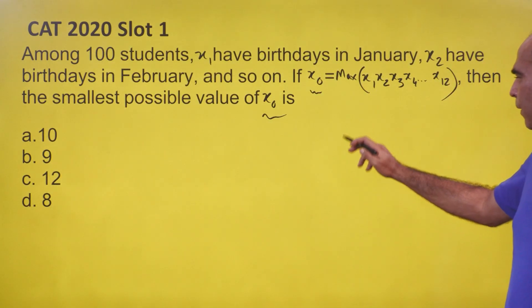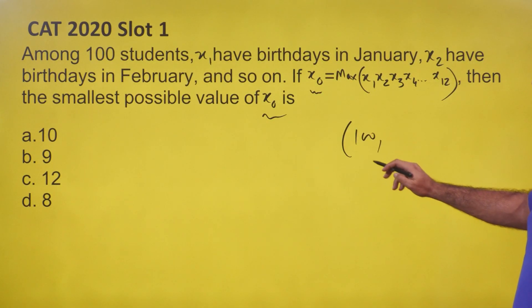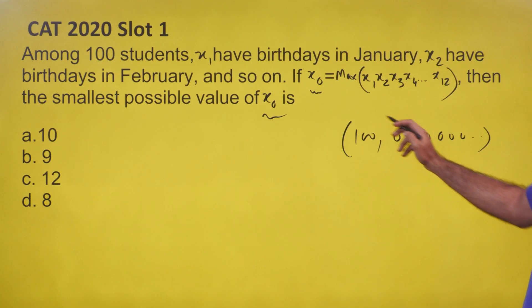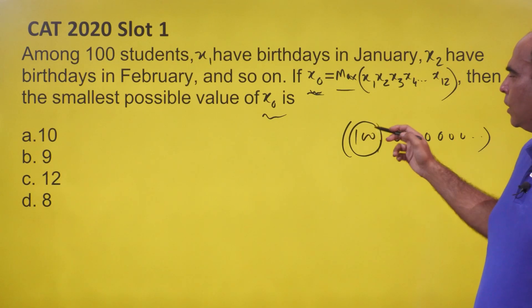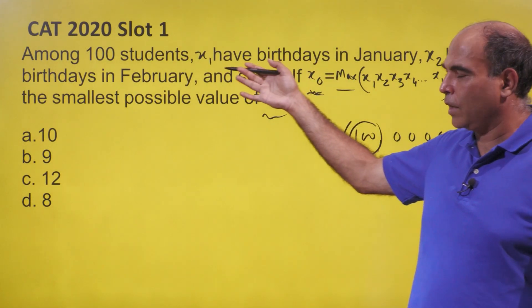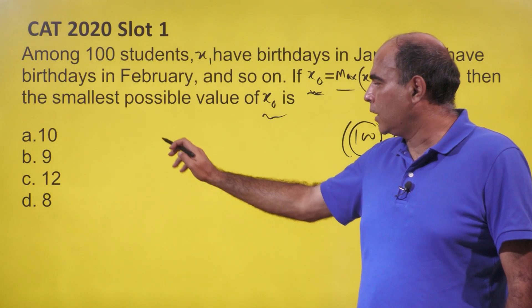You can think about it the other way: if I try to put all 100 in January and everything else is zero, since x₀ takes the maximum of these values, x₀ will be 100. Since the objective is to get the smallest possible x₀, the distribution has to be equal.